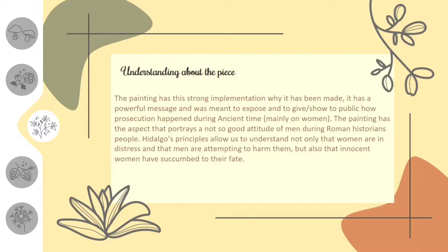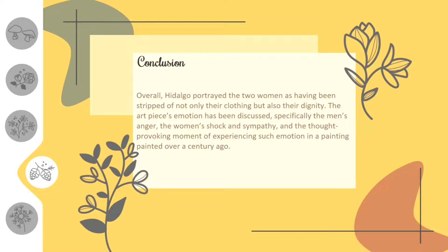As an overall conclusion about this masterpiece created by Felix Hidalgo, the painting shows how powerless women are in the hands of the Romans, and how easily Roman men put women's dignity under their feet. The masterpiece greatly shows a lot of emotions, which was the painter's main goal — to successfully convey an overflowing emotion so that just by looking at it, you can feel the pain, hatred, and anger that the women in the painting carried.